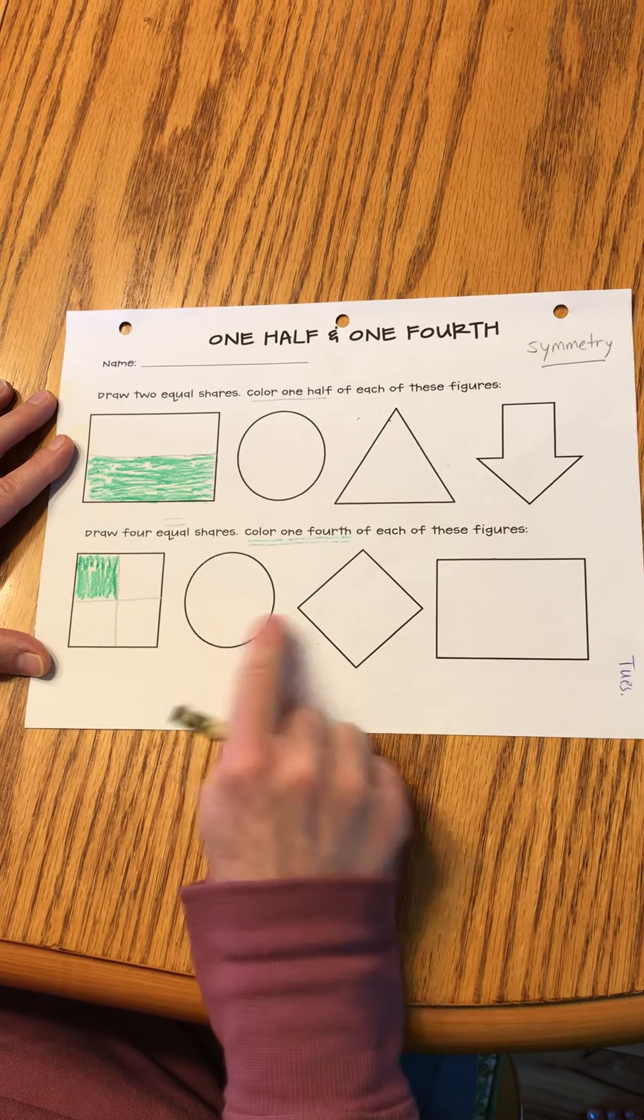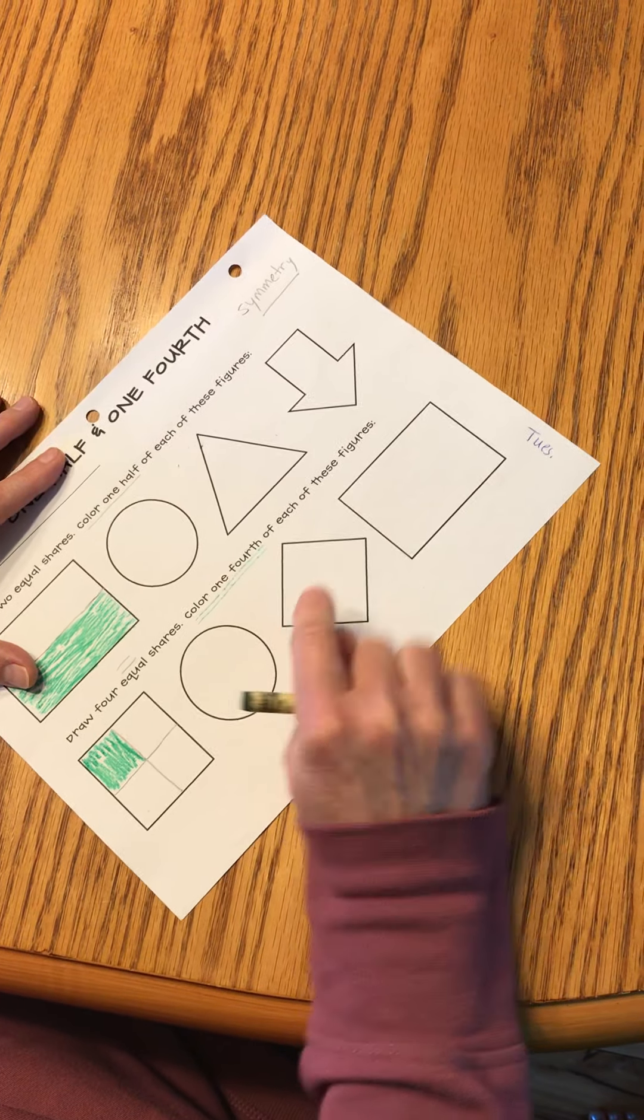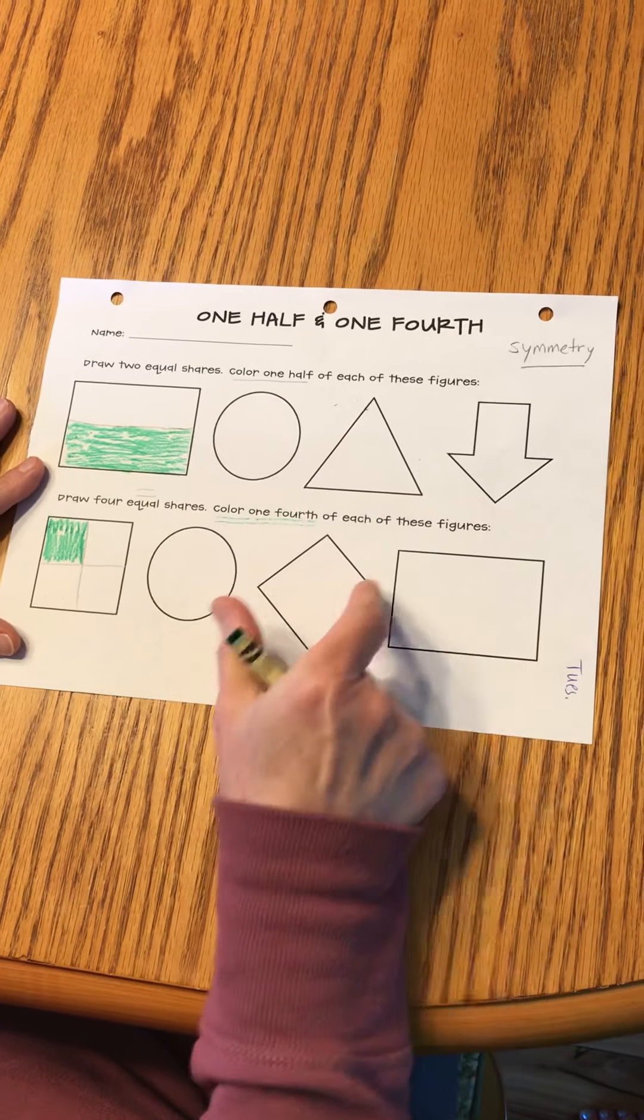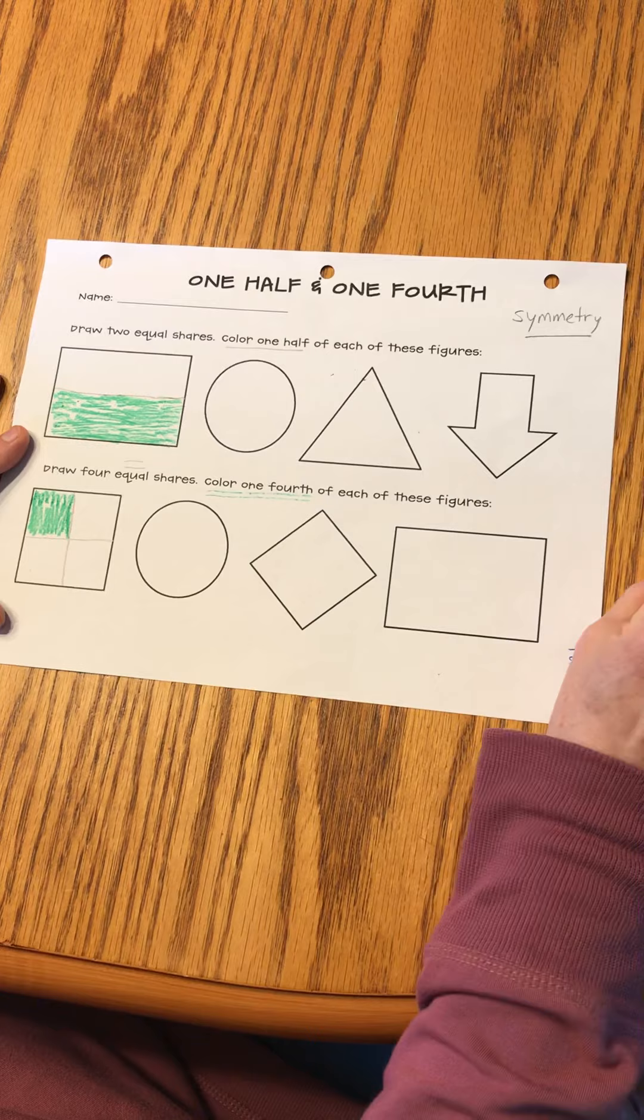Then you do the circle, another square. Remember, it's still a square because it still has square corners. It's just tipped to the side and the rectangle.